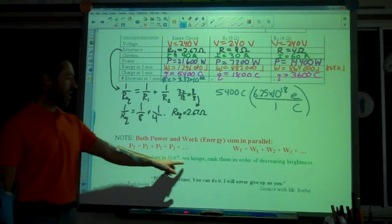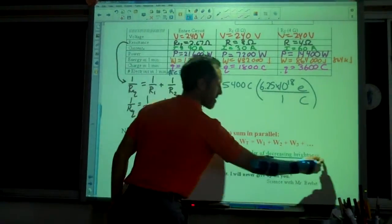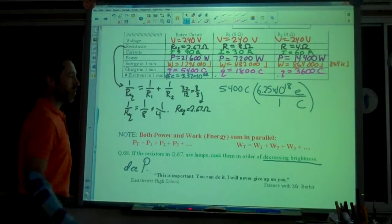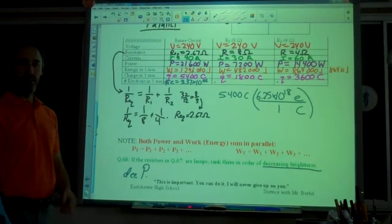I trust that you can do these two. You'll figure that out. And of course, if they are lamps, rank them in order of decreasing brightness this time. Which, of course, would mean decreasing power. Good. Cut.